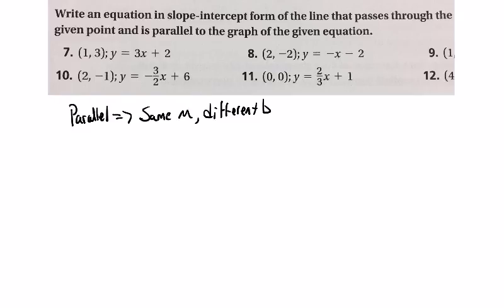So what are we going to do? Let's do number seven here so that we can see. We see that the point is (1,3). That's the point of the line that we need to write, the new equation we need to write, and the equation of the given line is y equals 3x plus 2.